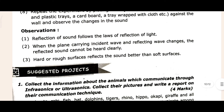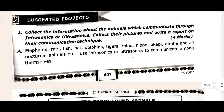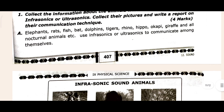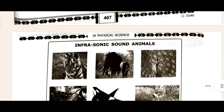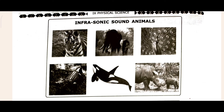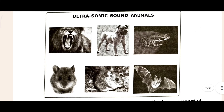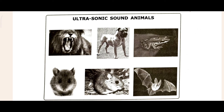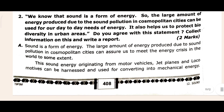The observation for the experiment is shown here. Now come to 'Suggested Projects' — the first project work is given and the answer follows. A picture is also given showing infrasonic sound animals: tiger, crocodile, dolphin, hippopotamus. Ultrasonic sound animals include dog, frog, mouse, rat, and bat. The second project work answer is also given and completes here.